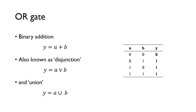An OR gate carries out binary addition. You'll see it written with a plus symbol, sometimes called disjunction written with this symbol, or the union operator written another way.